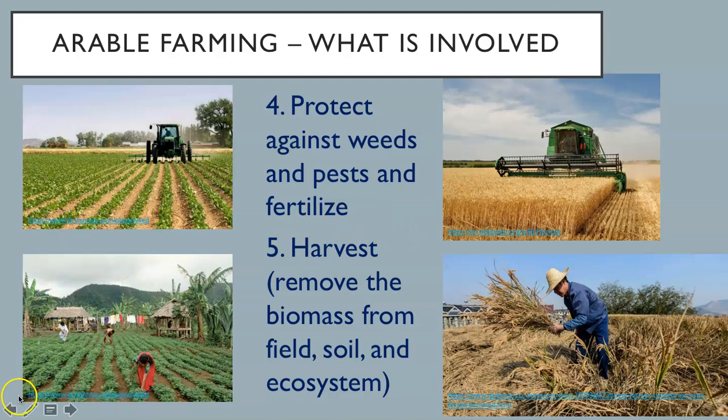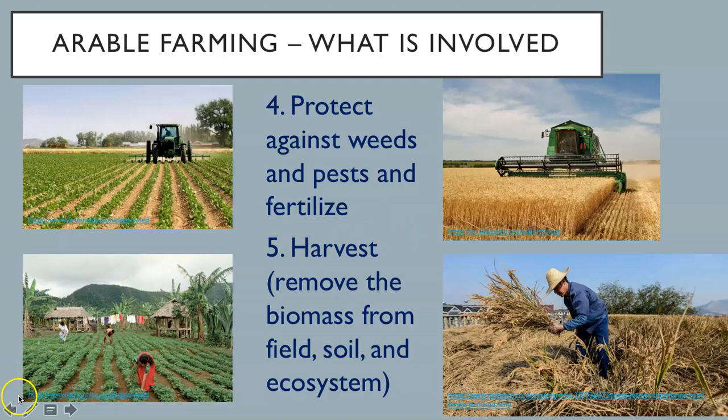When you remove the biomass from the field, the nutrients go with it. Thus, the fertility of the soil would decrease over time. To address this issue, crop rotation is practiced. A farmer divides up his land and plans a series of planting, including cover crops like leguminous plants — soya beans, peas, and beans — to add nitrogen to the soil at least every four years. In this example, plot one would have a different series of crops during the year, but the following year it would have a different series of crops, and plot two might have another series of planting.